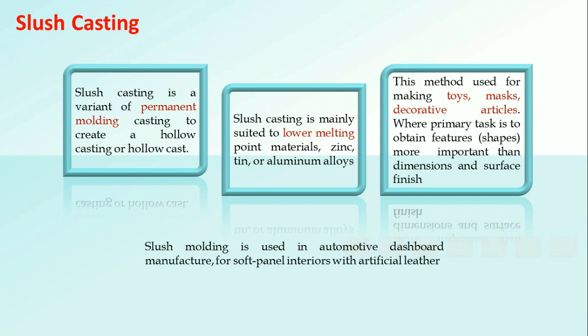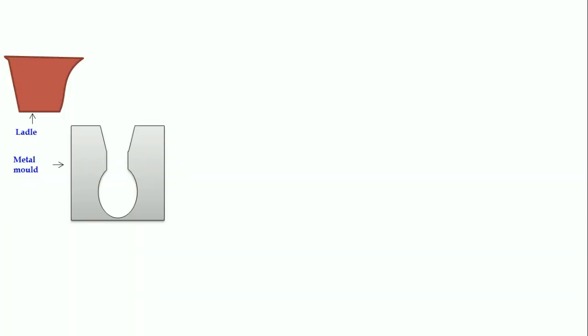Let's try to understand the steps involved. It is a variant of permanent molding casting process, so we have a mold cavity which is prepared using metal itself.